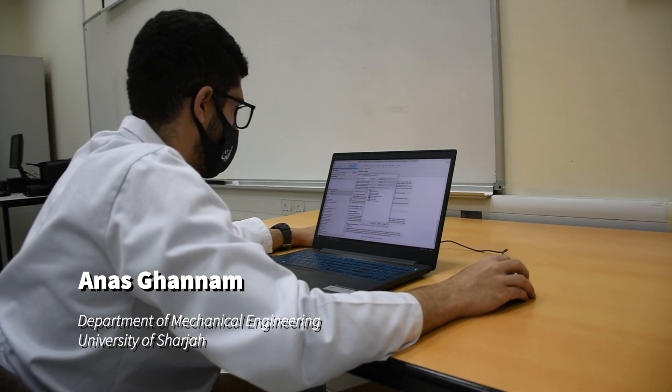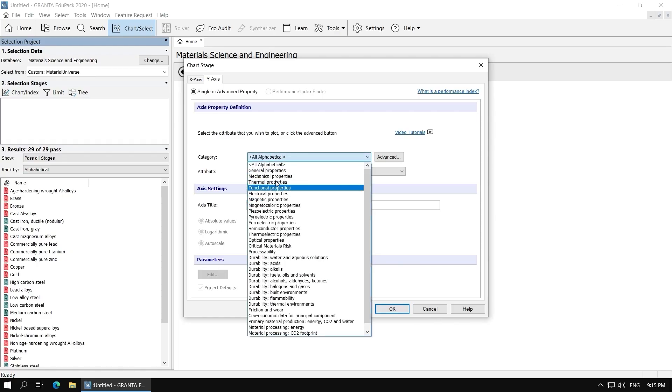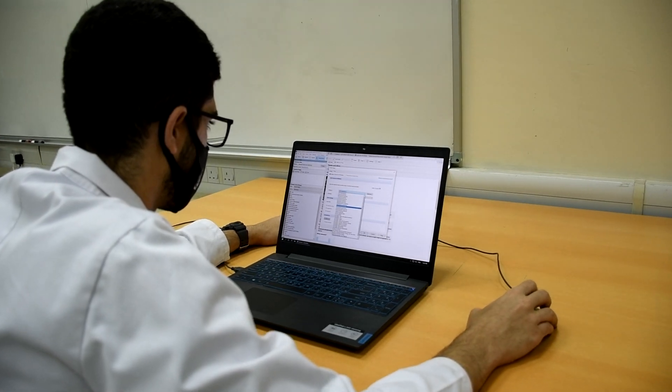To select the best material for increasing the productivity of the solar still, CES software is used to pick the most suitable material that fits the system. The parameters that are measured and analyzed in this software are thermoconductivity and price.